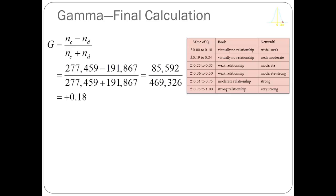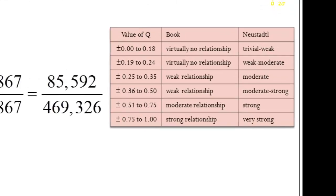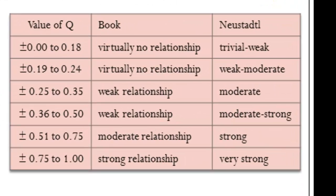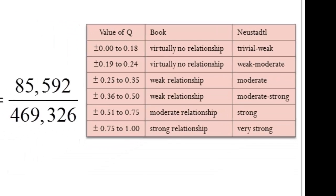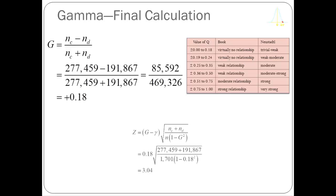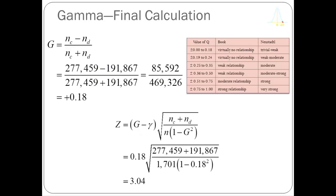With that information, the calculation of gamma is straightforward: concordant minus discordant pairs (85,592) divided by concordant plus discordant pairs (469,326) gives a gamma of 0.18. Using the guidelines from the book and my own guidelines, a value of 0.18 sits on the border between virtually no relationship and a trivial/weak-to-moderate relationship.